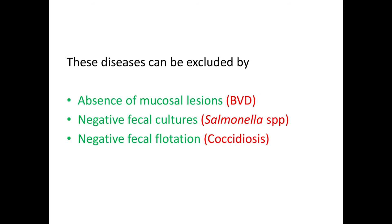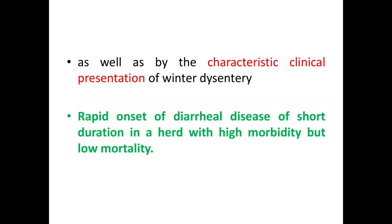These diseases can be excluded by the absence of mucosal lesions seen with bovine viral diarrhea, negative fecal cultures for Salmonella species, and negative fecal flotation for coccidiosis — as well as by the characteristic clinical presentation of winter dysentery: rapid onset of diarrheal disease of short duration in a herd with high morbidity but low mortality.